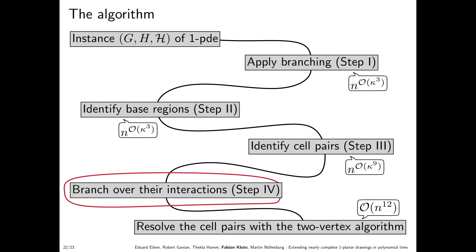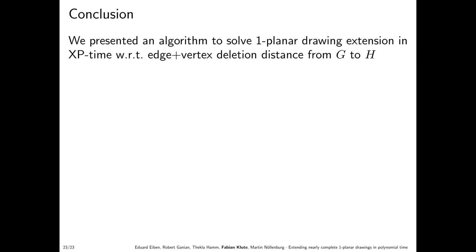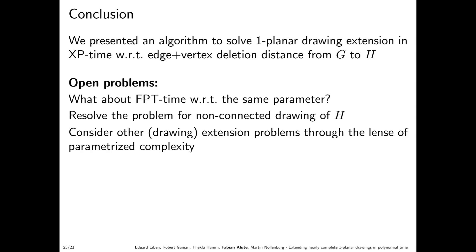Step four, which we skip in this talk, resolves the assignment of edges to base-cell pairs, introducing a branching factor of n^{kappa^{28}} — likely far from optimal. In conclusion, we presented an XP algorithm for one-planar drawing extension with respect to the edge-plus-vertex deletion distance from g to h. Open problems include: obtaining an FPT algorithm for this parameter, handling non-connected drawings, and considering other drawing extension problems through the lens of parameterized complexity. Thank you.